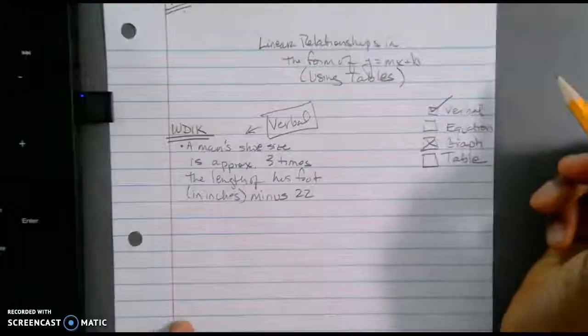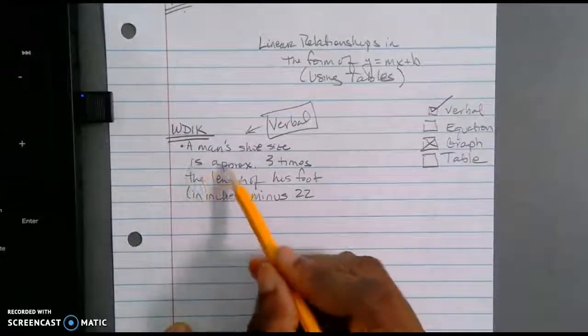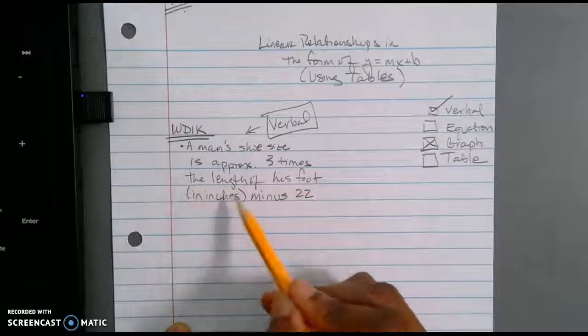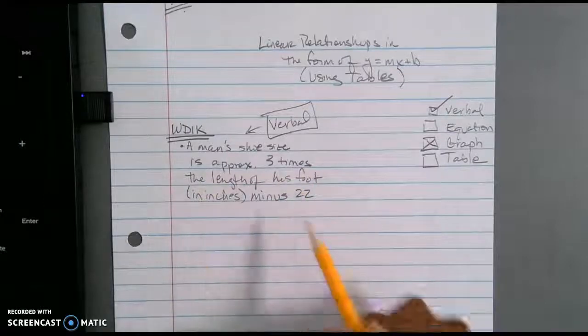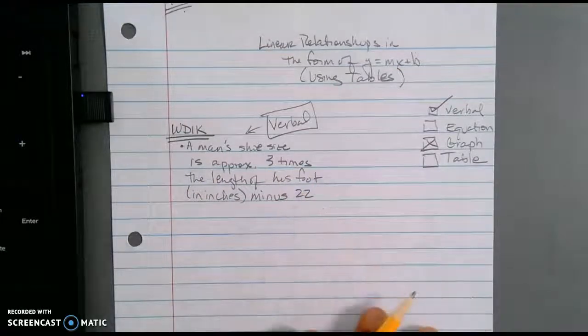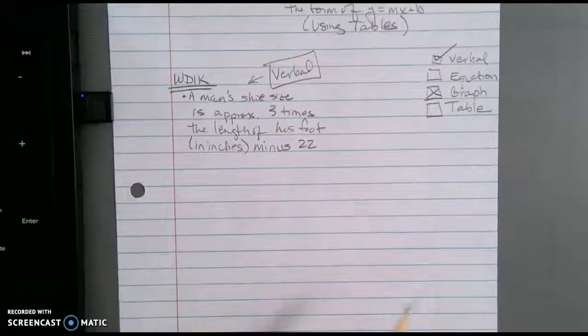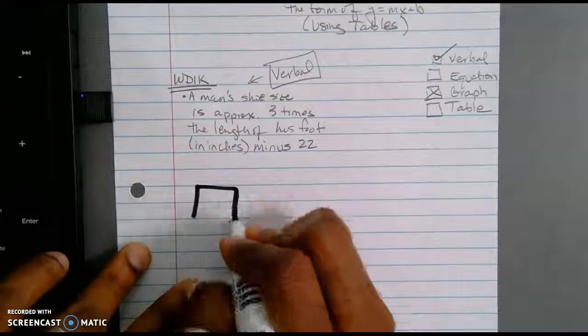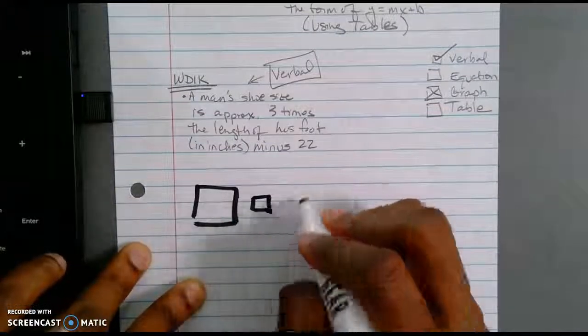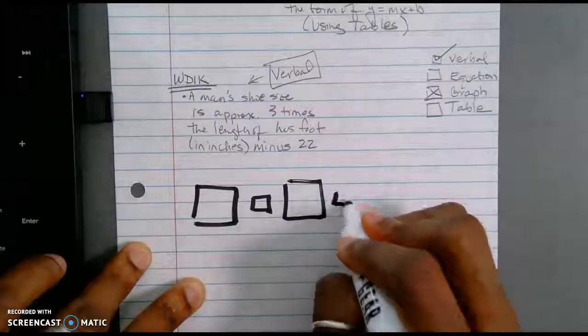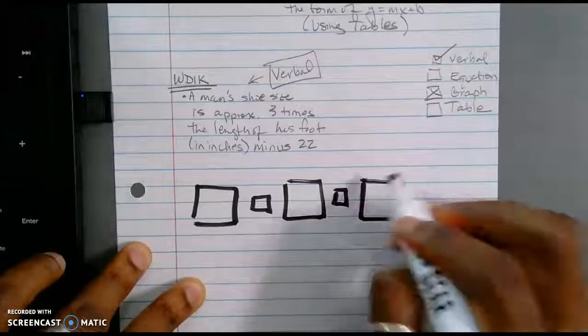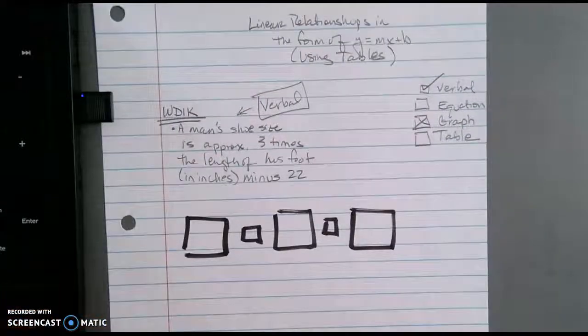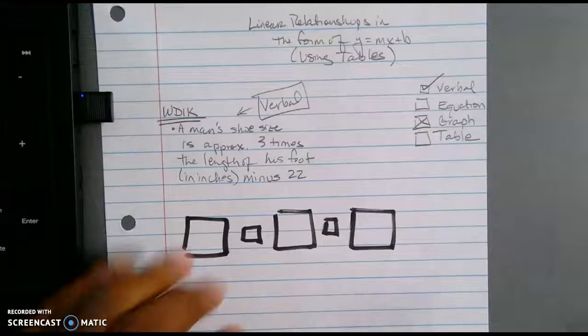Now I did write down what I know, and if you notice, the way that I've written this down, it's going to help us fill out our equation a little bit easier. So the next thing that I'm going to do is I'm going to give myself my equation frame. I'm going to write myself five boxes. Now if you notice here at the top of the screen, I'm going to write this in terms of y equals mx+b.